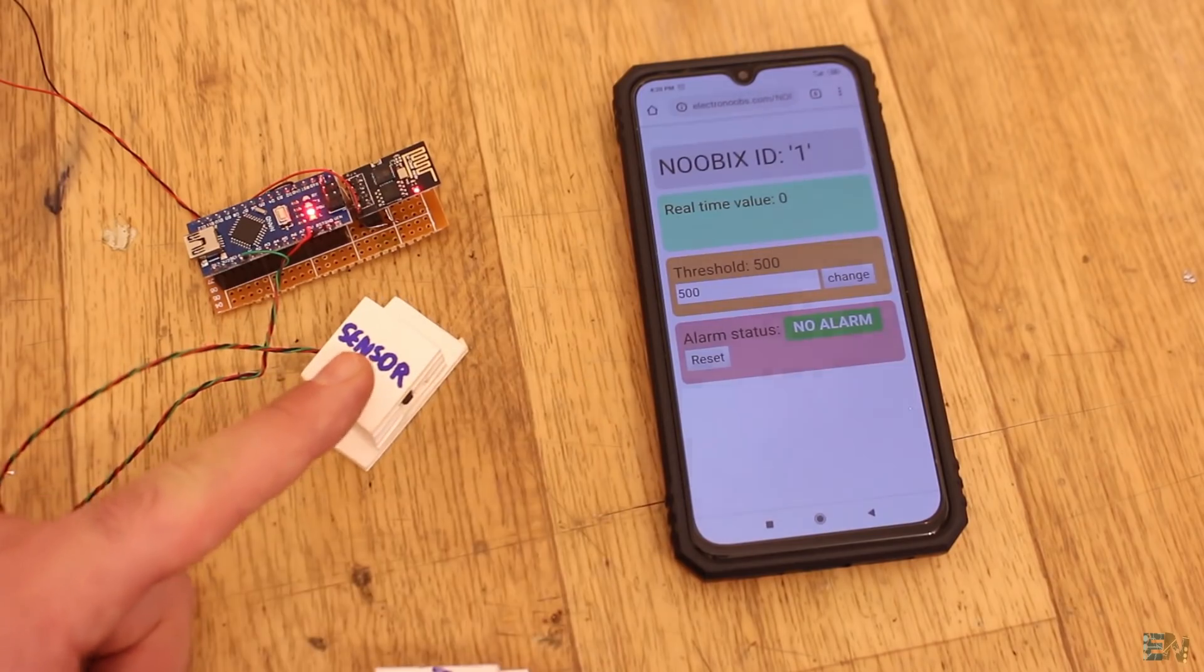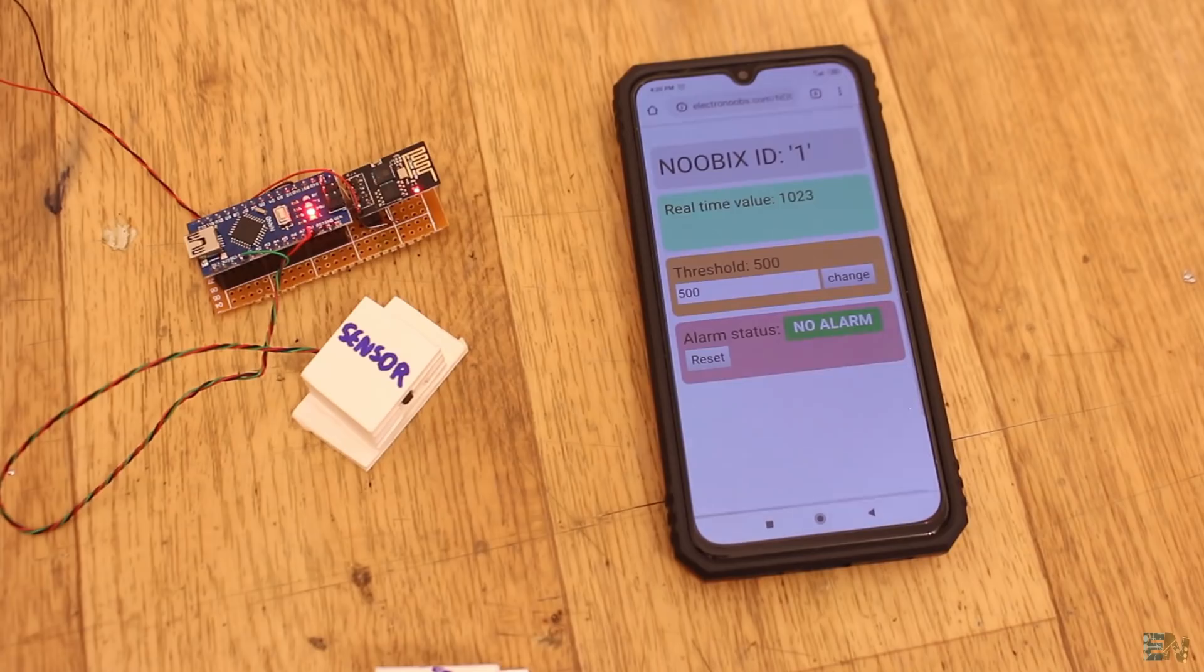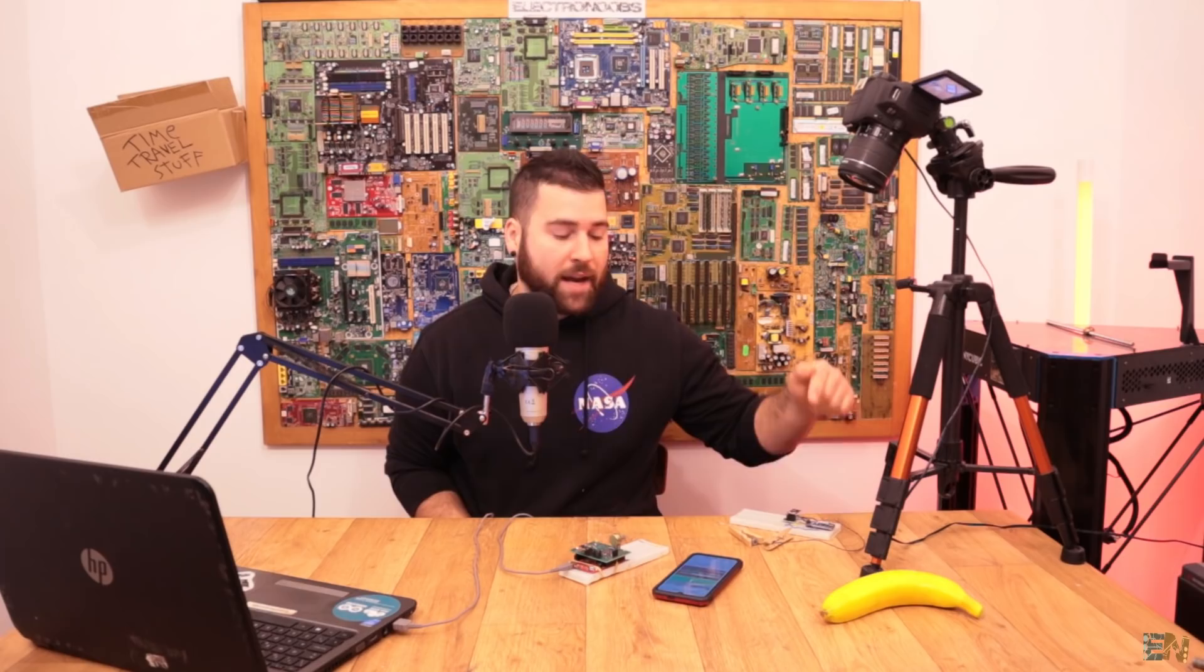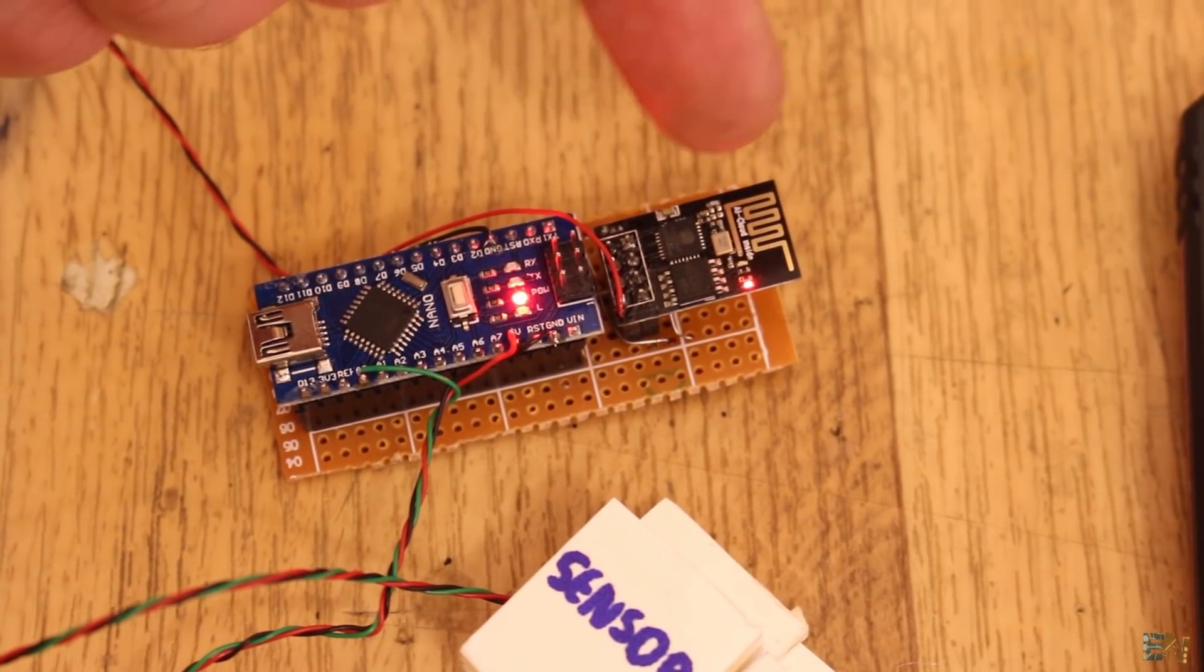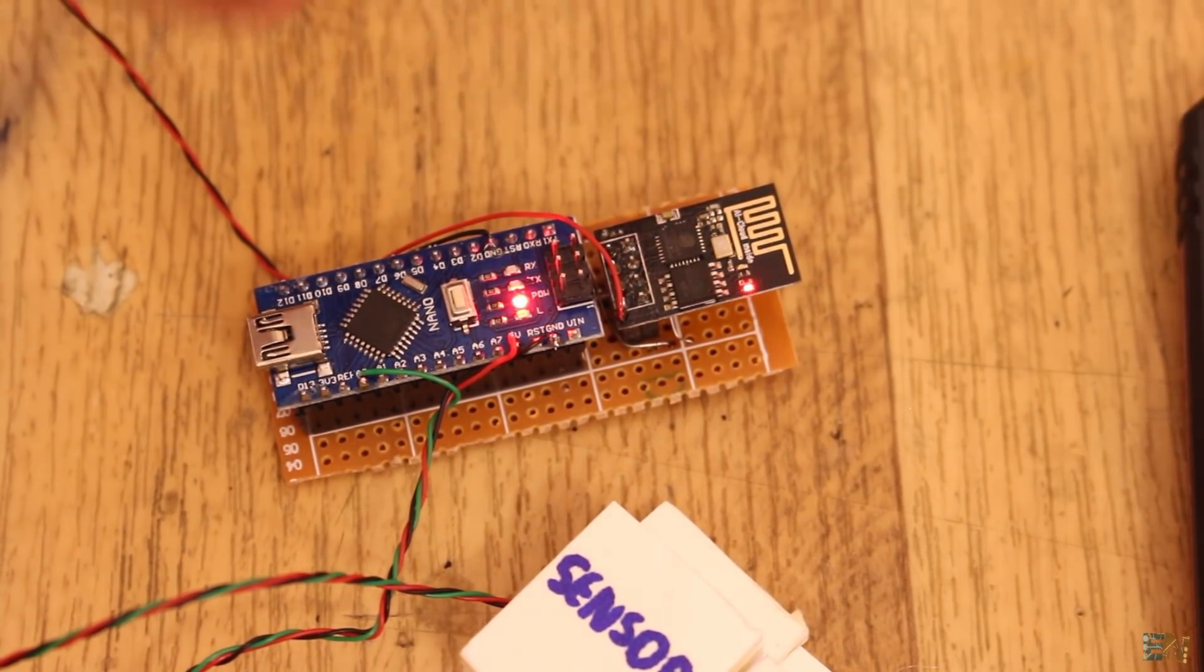Today's video is very simple. We will make a door lock alarm. That basically means we have a magnet and the hall sensor that will send data to the Arduino. The Arduino will send data to the ESP8266 and that will send data to the database.